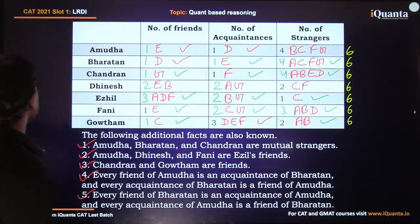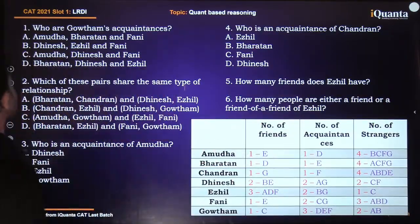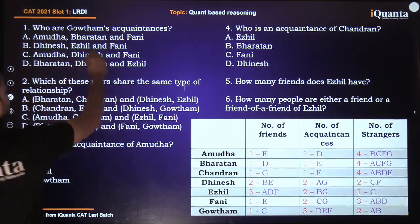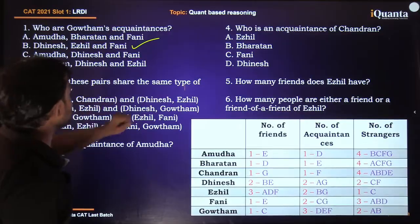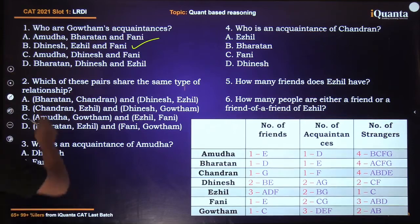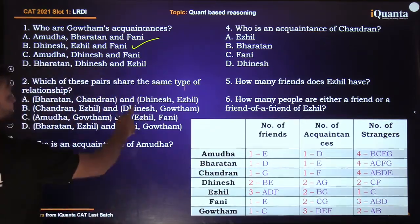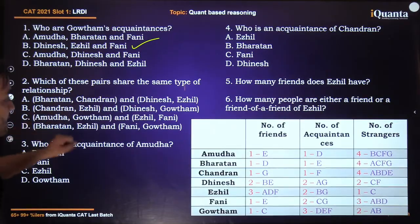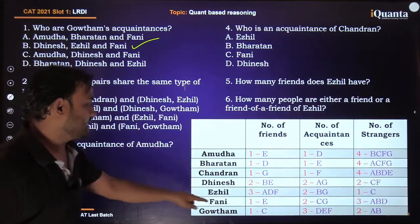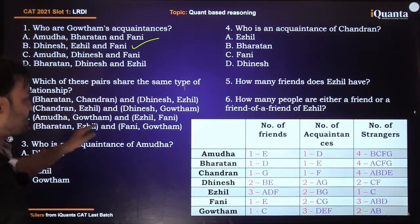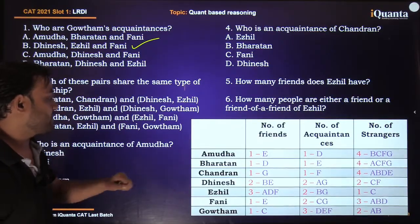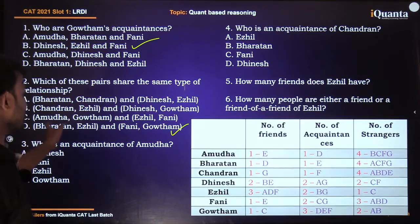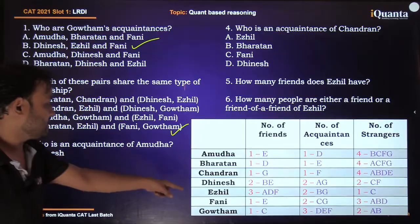Now we solve the questions. Question 1: Who are G's acquaintances? From the table, G's acquaintances are D, E and F — answer B. Question 2: Which pairs share the same type of relationship? B and C are strangers while D and E are friends, so option A is out. C and E are strangers while D and G are not strangers, so option C is out. B and E are acquaintances and F and G are acquaintances — so option D is correct.